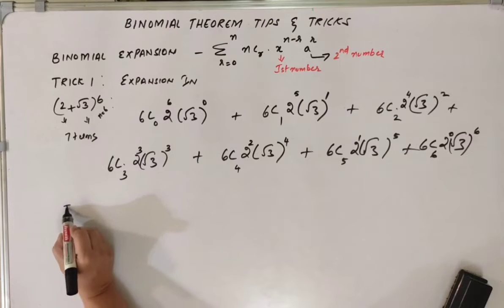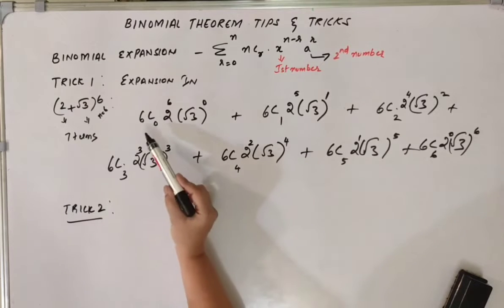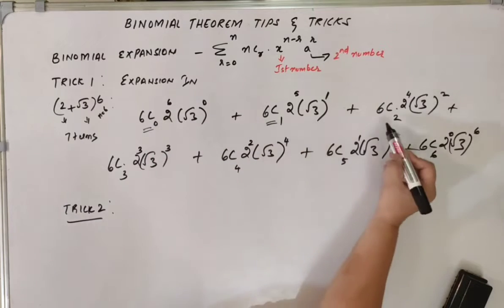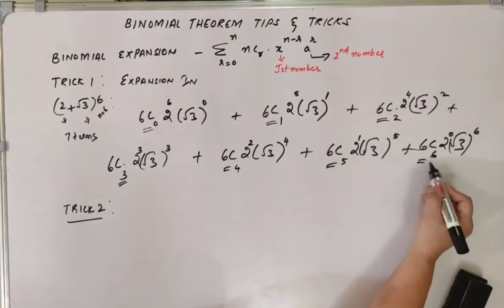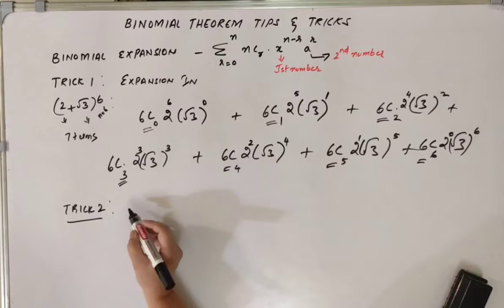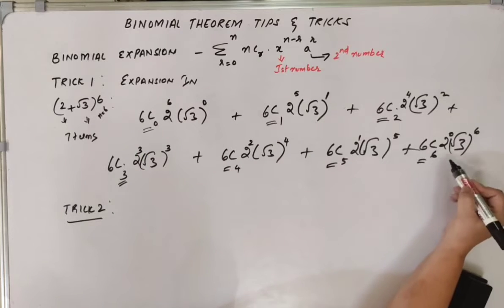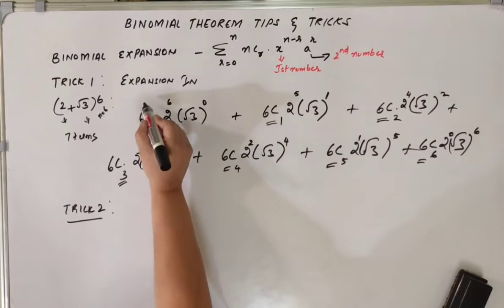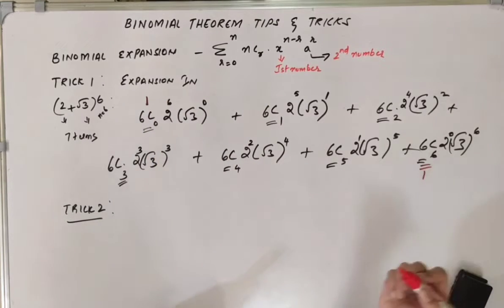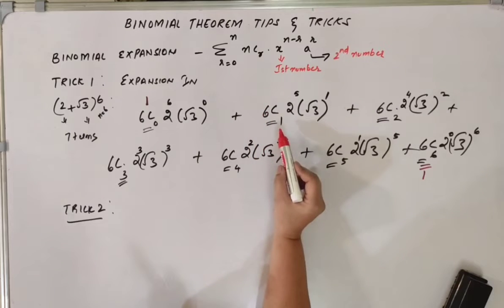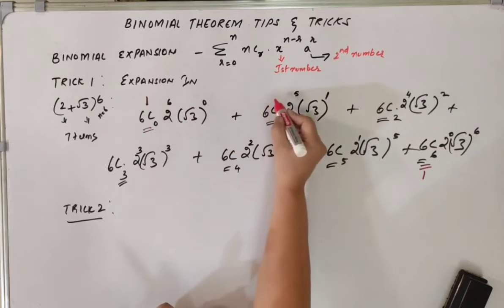Now trick number 2. This is a very important one — how to calculate the binomial coefficients 6C1, 6C2, 6C3, and so on. The first trick is that the first term and last term are always going to be 1. The second term is always going to be the power itself — so 6C1 will be 6 in this case.